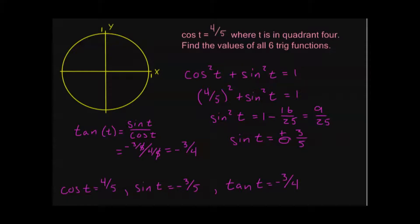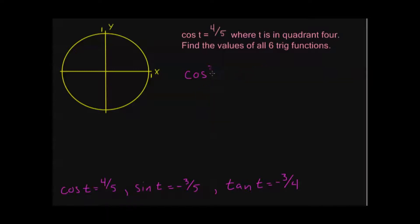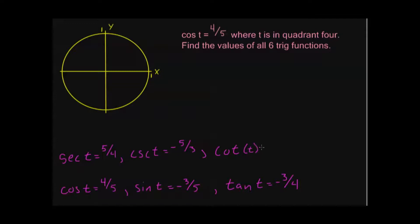With these kinds of problems, you always want to get sine, cosine, and tangent first, because the other three functions are just their reciprocals. If I have cosine, secant is just 1 over cosine — the reciprocal — so it's 5 fourths. Cosecant is the reciprocal of sine, so that's negative 5 thirds. And cotangent is the reciprocal of tangent, so that's negative 4 thirds. We've found all six trig function values just from knowing cosine and the quadrant.